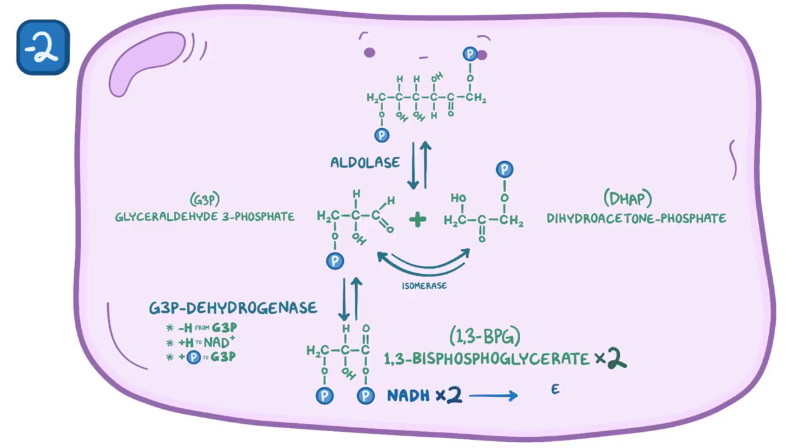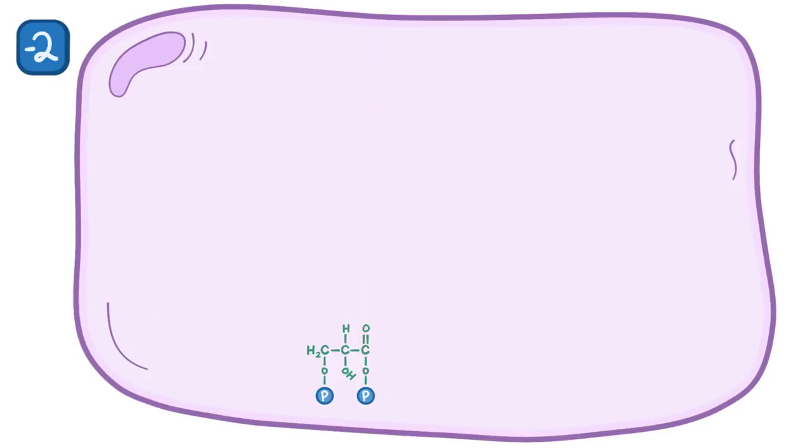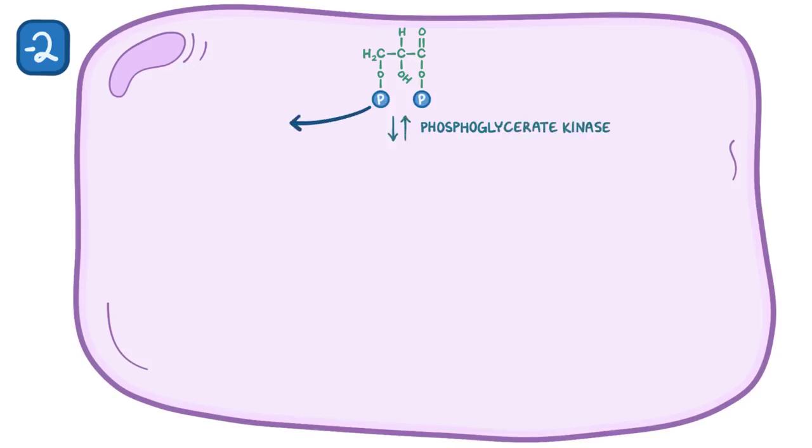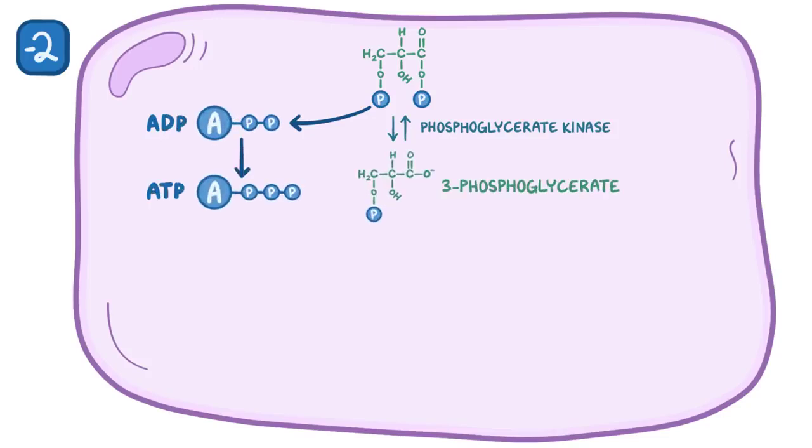Each NADH molecule enters the electron transport chain in the mitochondria and goes on to make roughly 3 ATP each. Now an enzyme called phosphoglycerate kinase removes a phosphate from the first carbon of 1,3-BPG and gives it to ADP, making 3-phosphoglycerate and ATP as a byproduct. So we'll add two more ATPs to our counter because this reaction happens twice, so now we're back at zero.